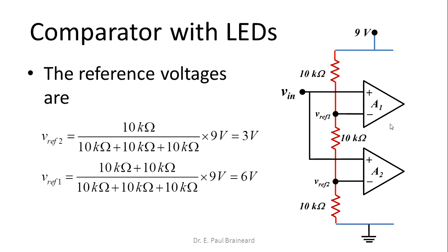Let us calculate VREF2. Looking at the voltage divider circuit, VREF2 is the voltage across the bottom 10kΩ resistor with respect to ground. This is calculated as 10kΩ divided by (10 + 10 + 10)kΩ, multiplied by 9 volts. Therefore, the reference voltage VREF2 is 3 volts.